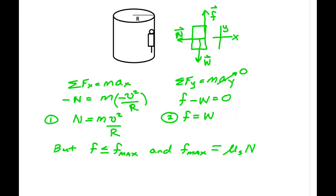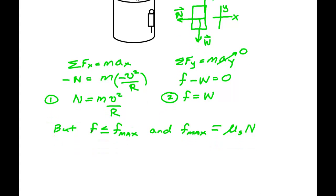Now, using what we have here, f is less than this. That means that the weight must be less than or equal to f. So using equation two, we have that the weight is less than or equal to f_max. And therefore, the weight, mg, must be less than or equal to mu times N. But N is m v squared over r.